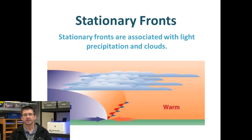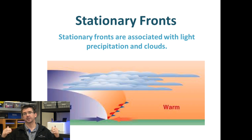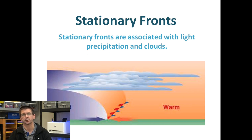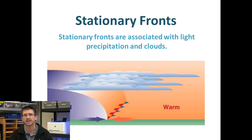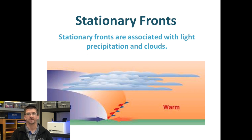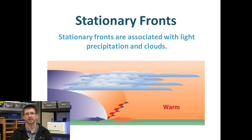Stationary fronts happen when two air masses actually come together and meet, going in opposite directions. You might have a warmer air mass meeting a cooler air mass, but they push against each other. A stationary front — if something's stationary, it means it's not moving — and stationary fronts basically do that; they just tend to sit in a place as these air masses push against each other.